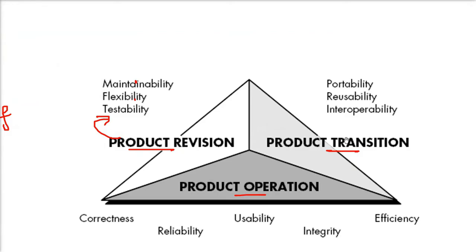Looking at the different quality factors in McCall's model: product transition means the system needs interoperability, portability, and reusability. Product operation requires correctness, reliability, usability, integrity, and efficiency. Product revision, which covers testing and maintenance, requires maintainability, flexibility, and testability.